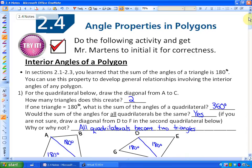I hope you've done the activity for yourself. I'm going to go over what you've learned or what you should have learned rather quickly. It says in sections 2.1 to 2.3, you learned that the sum of the angles of a triangle is 180 degrees, and we can use this property to develop general relationships involving the interior angles for any polygon.